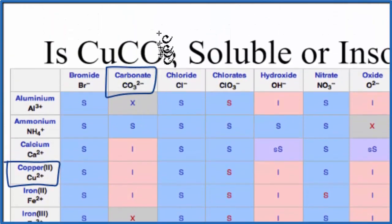Note that we know that the carbonate is going to have a 2- ionic charge, so the copper has to be 2+. That's why we call this copper(II) carbonate. So we go down, we go over, and we see that 'I' there. That means that copper carbonate is going to be insoluble in water.